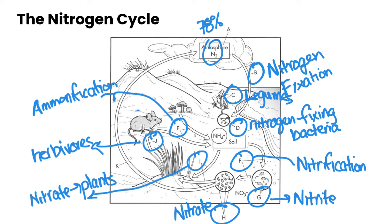What then happens is that when those animals digest it, some of the nitrogen becomes ammonia again. This is toxic for animals, so they excrete it in their waste and it goes back into the soil, where it can then go through the process of ammonification again.